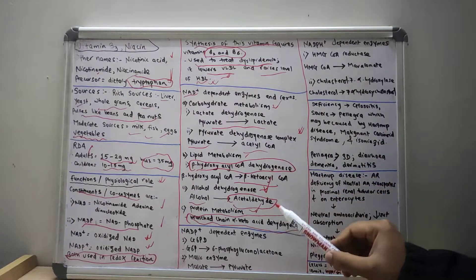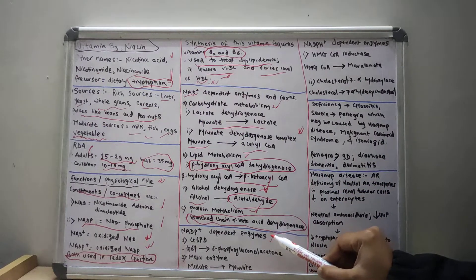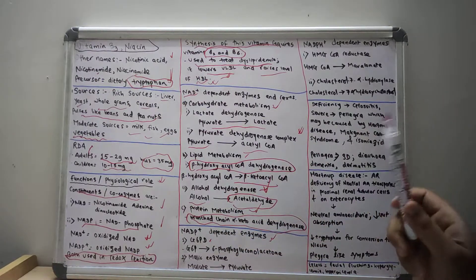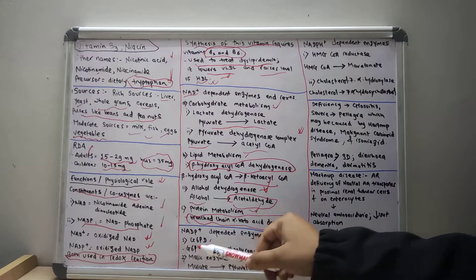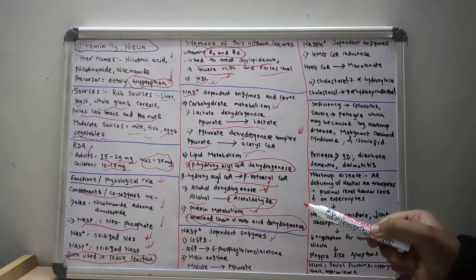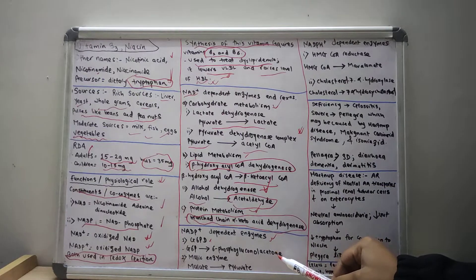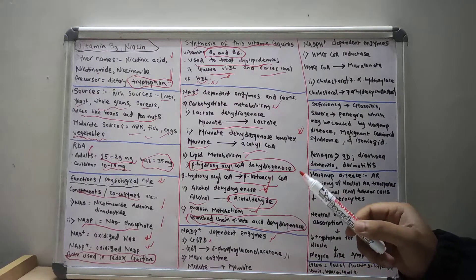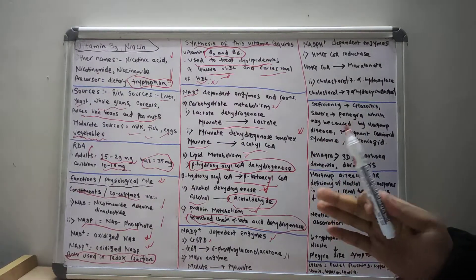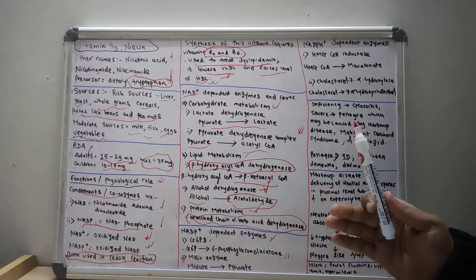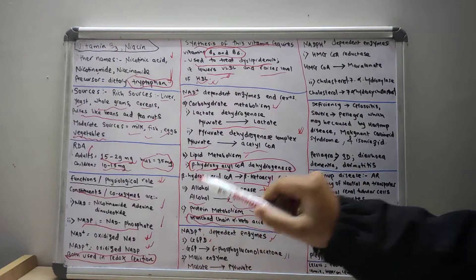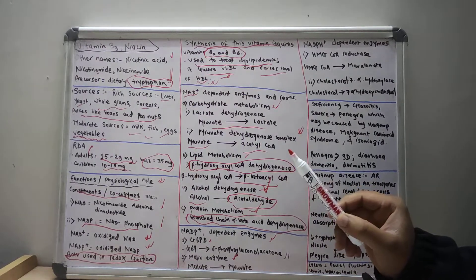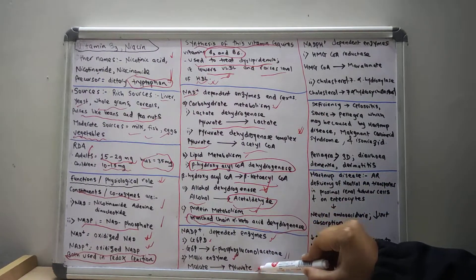Now let us discuss NADP plus dependent enzymes. Glucose-6-phosphate dehydrogenase requires NADP plus when glucose-6-phosphate is changed into 6-phosphogluconolactone. The malic enzyme also requires NADP plus to change malate into pyruvate.